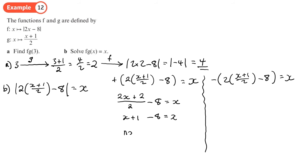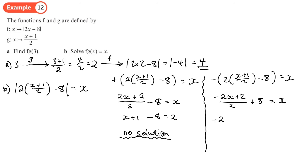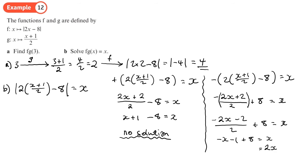From the positive case, x + 1 − 8 = x gives no solution. From the negative case, −(2x + 2)/2 + 8 = x simplifies to −x − 1 + 8 = x. Adding x to both sides gives 2x = 9, so x = 9/2 = 4.5. That's our only solution.